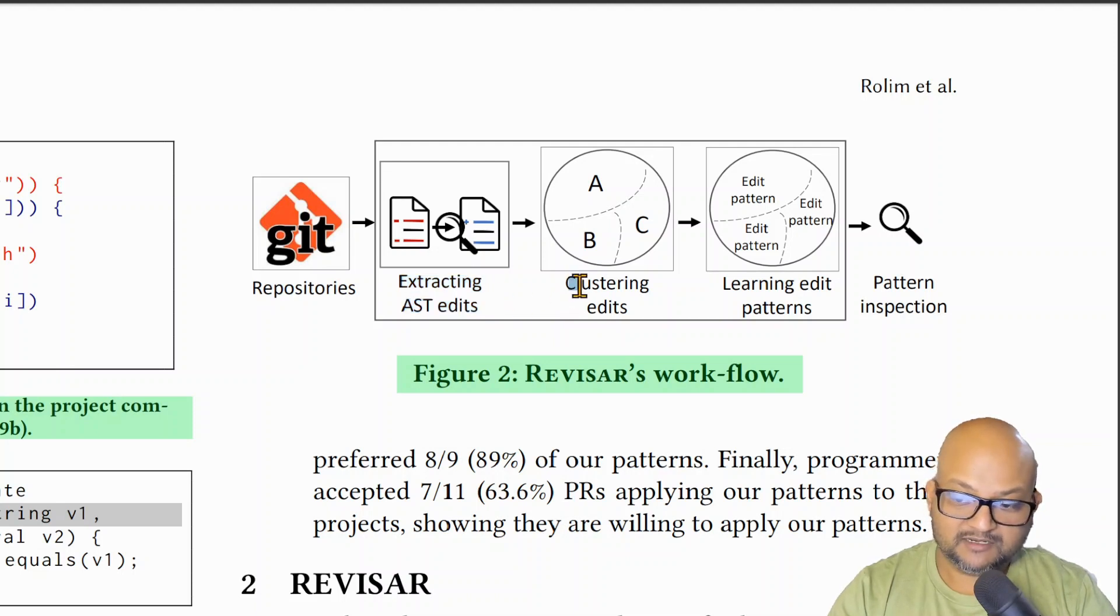After doing that, it tries to cluster those edits into ones that have similar edit patterns. And from those clusters, it tries to extract a pattern that matches most of the edits in that cluster. The output is a list of tentative quick fixes that can then be vetted by a human and fed into tools such as FindBugs or Error Prone.